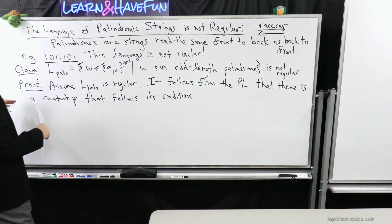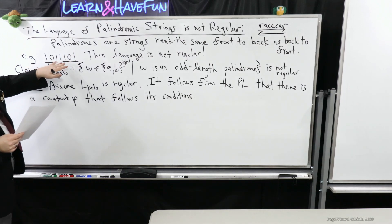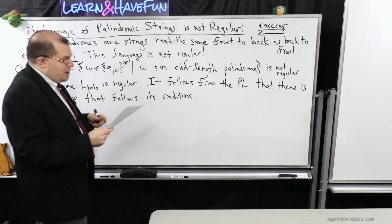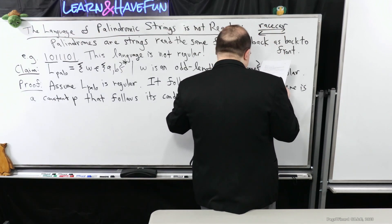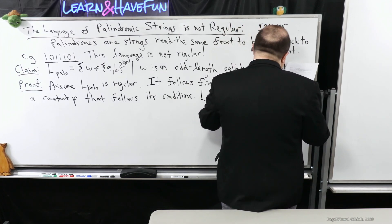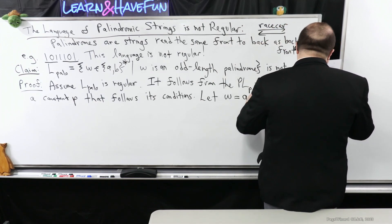So a tip I was going to mention here is that I have a symmetry that happens here where I have a free spot in the middle. That's what happens with these odd length palindromes. So why don't I try to do something with that? So I'm going to let W be A to the P, B, A to the P.